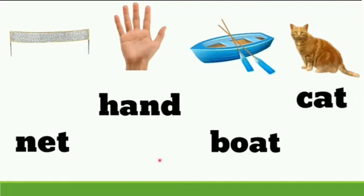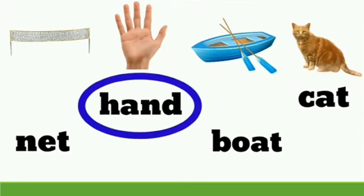Now we'll see the next example: Net, Hand, Boat, Cat. Here, which is the odd man out? Correct! It's Hand. Because all other words are ending with the letter T, and Hand ends with the letter D. So that's why Hand is the odd man out.